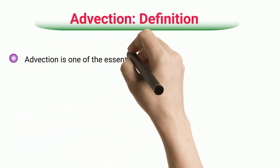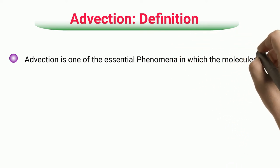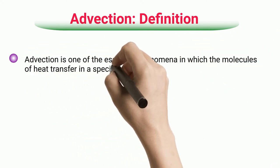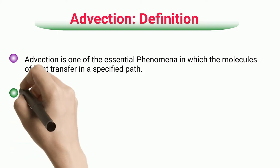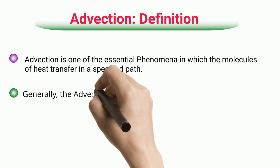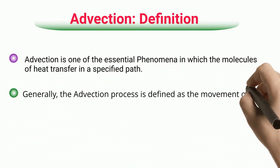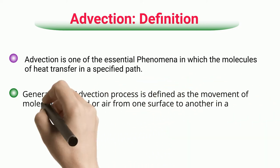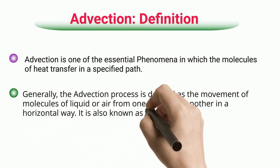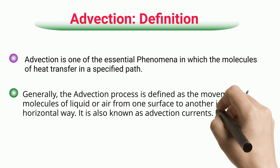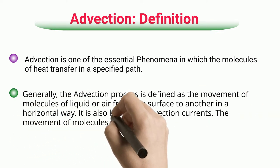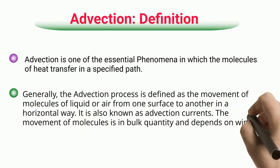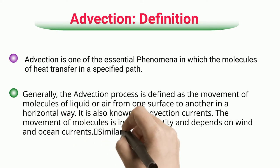Advection — Definition. Advection is one of the essential phenomena in which the molecules of heat transfer in a specified path. Generally, the advection process is defined as the movement of molecules of liquid or air from one surface to another in a horizontal way. It is also known as advection currents. The movement of molecules is in bulk quantity and depends on wind and ocean currents.